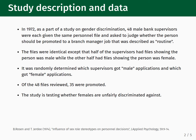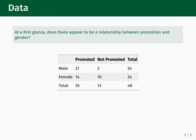The experiment proceeded, and out of the 48 files reviewed, 35 were promoted. This study, as constructed, is an example of how you could test whether or not women are unfairly discriminated against in promotional decisions. It is also an example of a scientific experiment. There was only one variable — whether or not the personnel file said male or female — and the files were randomly distributed to the bank supervisors. How the promotions were distributed among the male and female personnel files is summarized in the following table.